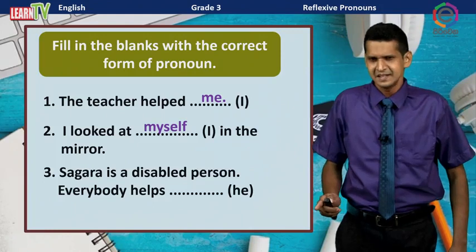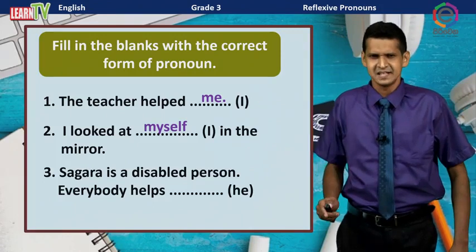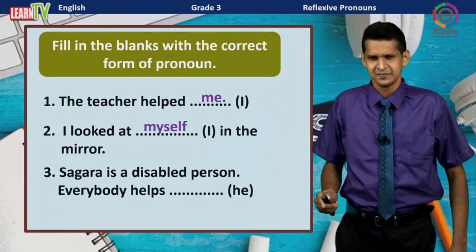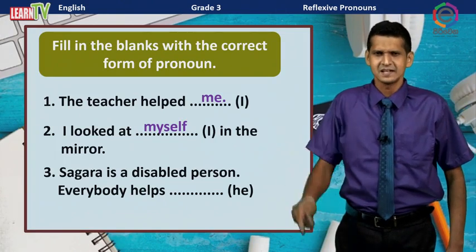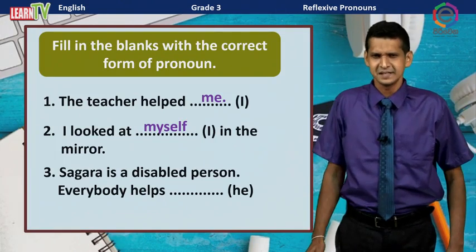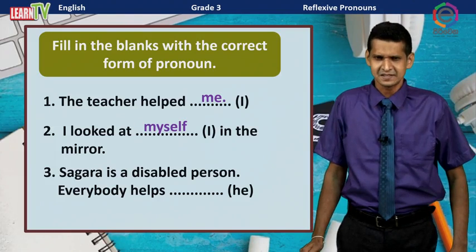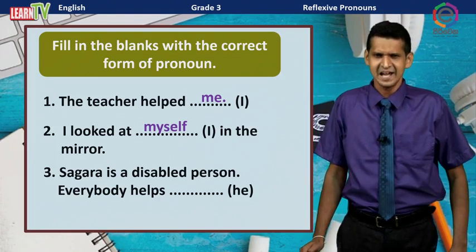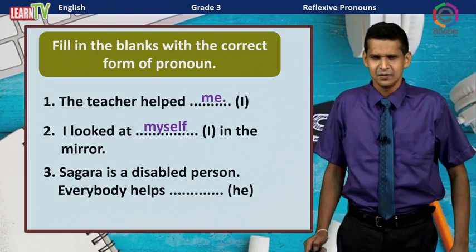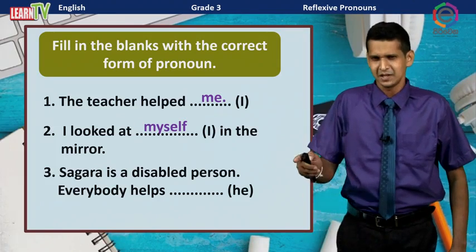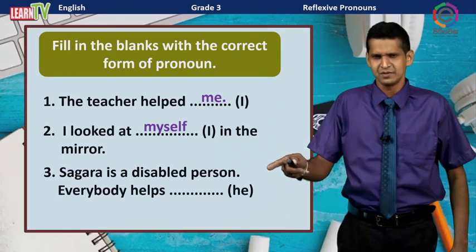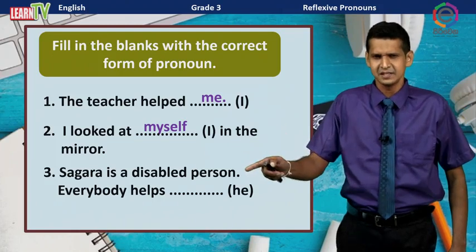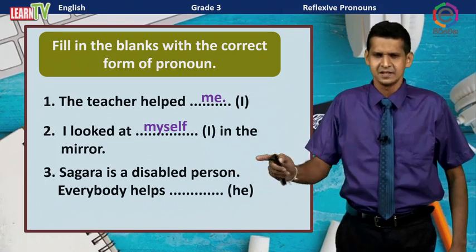Did you understand the difference between the first and the second? Number three: Sagar is a disabled person. Everybody helps ___. We use the object pronoun of 'he,' which is 'him.' Everybody helps him.